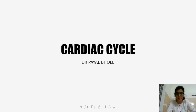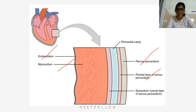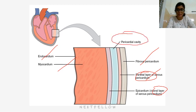Let's talk about the cardiac cycle. The heart consists of three layers: the endocardium, the myocardium (the muscular level), and the pericardium. The pericardium consists of fibrous pericardium and the serous pericardium. The serous pericardium contains the parietal layer and the visceral layer, and the space between them is the pericardial cavity, which contains the pericardial fluid.